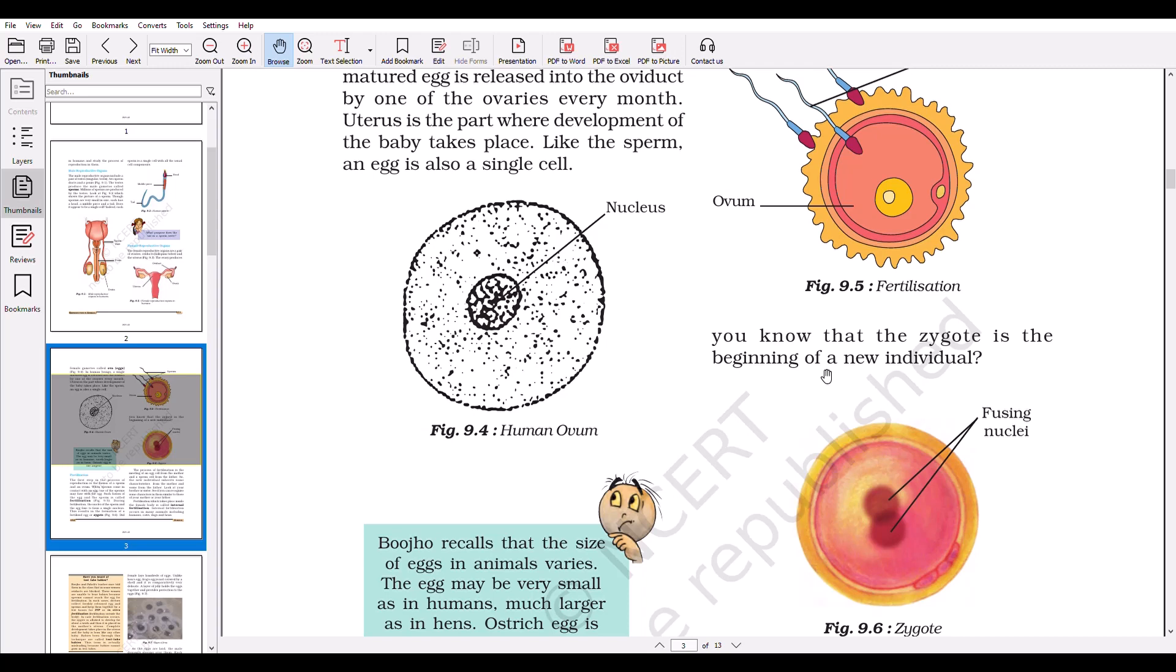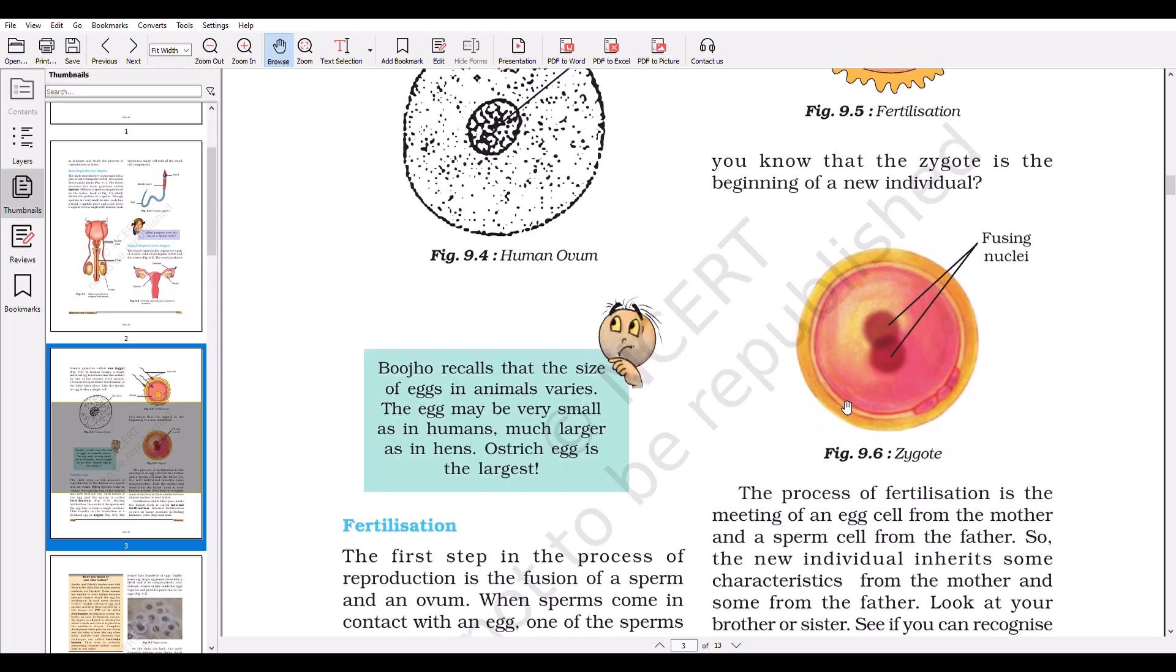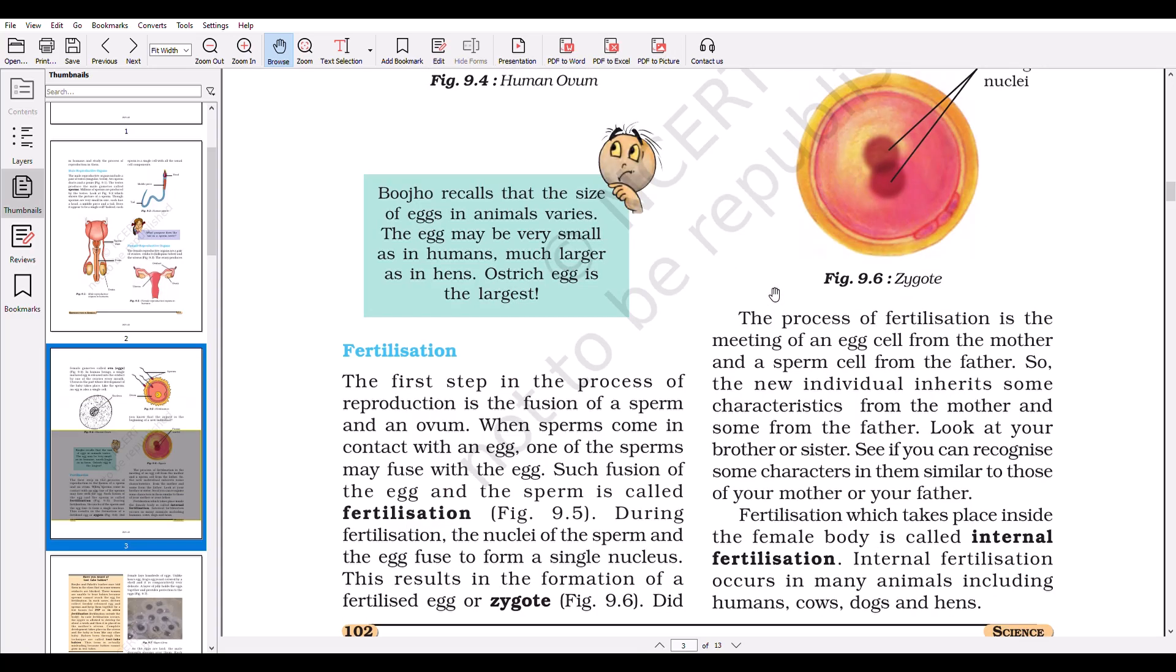So you can say that the zygote is the beginning of a new individual. The size of the egg may be very small, as in the case of humans, and it may also be very large, as in the case of hens and ostriches. The ostrich egg is the largest egg.